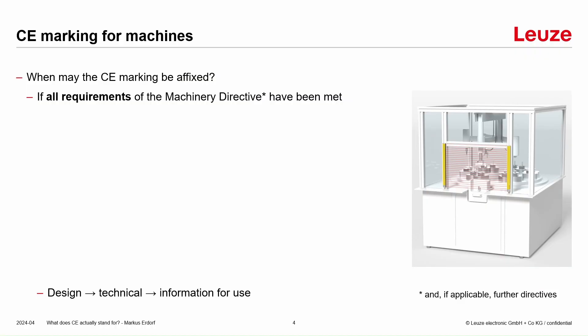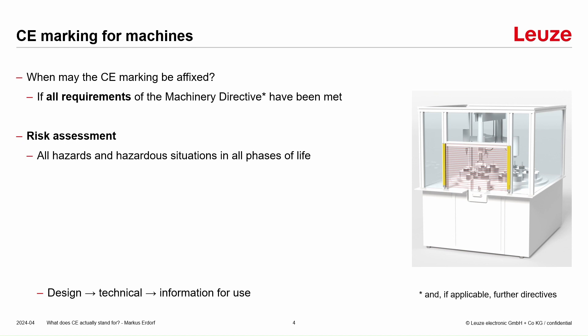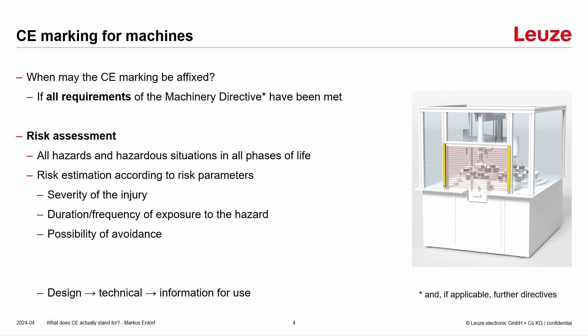The big question is: when is it allowed to affix the CE marking? The answer is simple — when all requirements of the machinery directive, and if applicable further directives, have been met. The main topic here is the risk assessment, where the manufacturer looks for all hazards and hazardous situations in all phases of the machinery's life. Then a risk estimation must be done according to risk parameters: the severity of injury, the duration and frequency of exposure to the hazard, and also the possibility of avoidance.